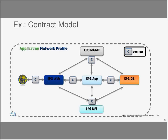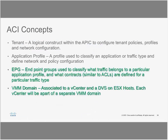In a three-tier application, you have EPG management, EPG for NFS storage, EPG web — everything predefined so that two applications, two VMs, or two endpoints get the same conditioning throughout the ACI fabric. To summarize ACI concepts: tenant is a logical construct where you define policies, profiles, and network configuration; application profile ties everything together; EPG is your endpoint group for segregating traffic; and VM domain is the virtual manager that APIC syncs with — vCenter or Hyper-V — to retrieve VM information.